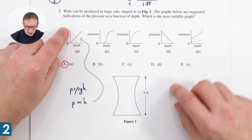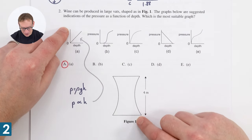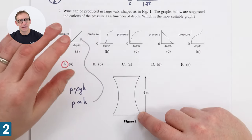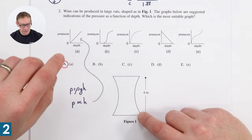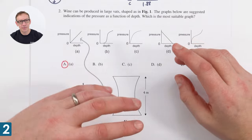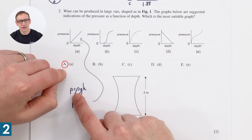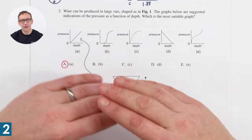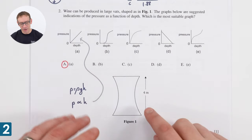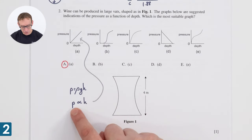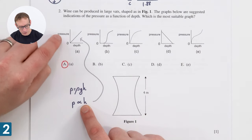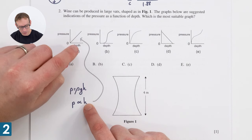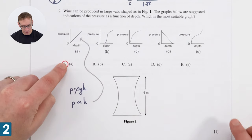The second question initially got me thinking because we've got a strangely shaped vessel. However, there's an equation from GCSE physics: pressure at a depth depends on the density of the fluid (constant), the gravitational field strength (constant), and the height of fluid above it. The shape doesn't really matter — pressure is proportional to depth. So the answer is A.